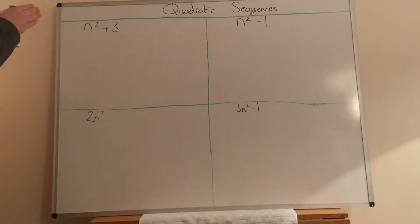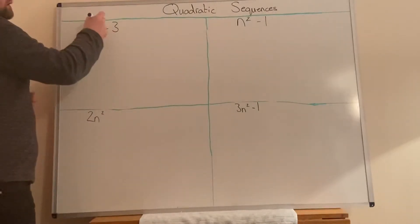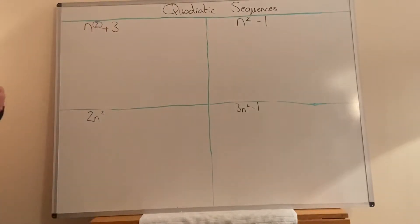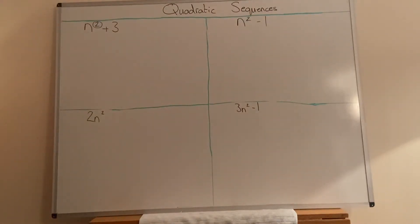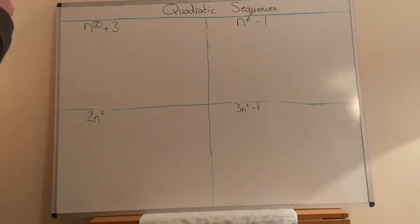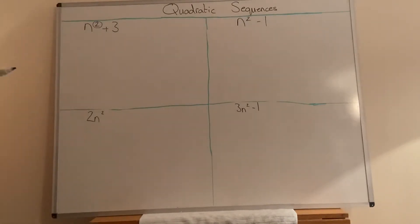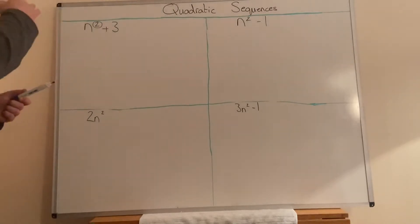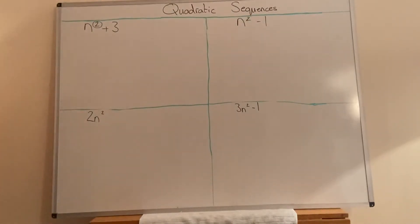Now, quadratic — when we have a power of two, something squared, that means it's quadratic. That's all that means, it's just a fancy word for it, so don't worry too much about that. What we're going to do today is we're going to generate a sequence — we're going to find a sequence when we've been given the nth term, we've been given the rule for the sequence, and we need to make up the sequence. We're going to find the first three terms of each sequence.